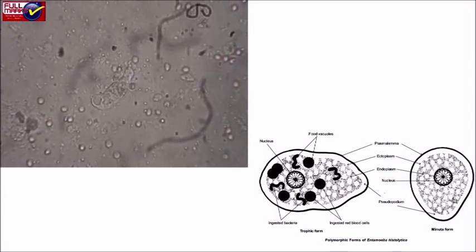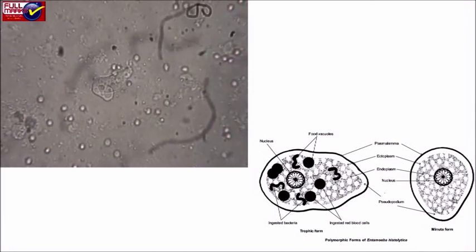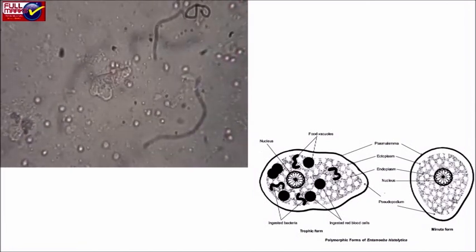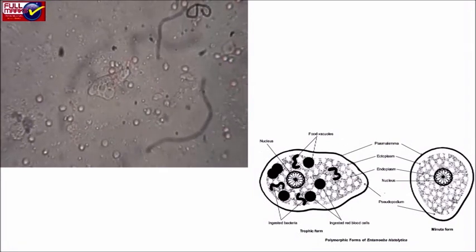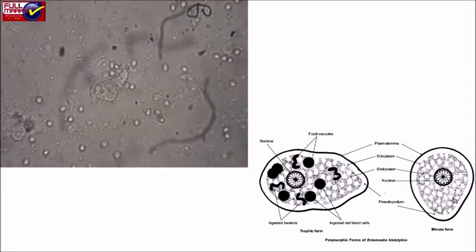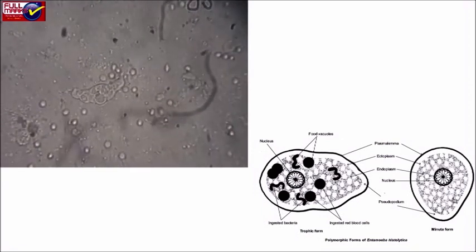Comments: It is a monogenetic endoparasite of man found in the upper part of large intestine. It occurs in two distinct forms: trophozoite form or magna form, and precystic form or minuta form.